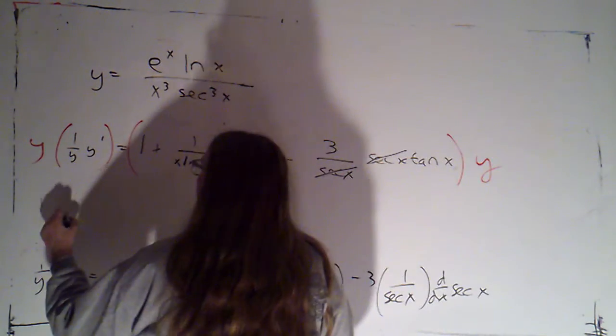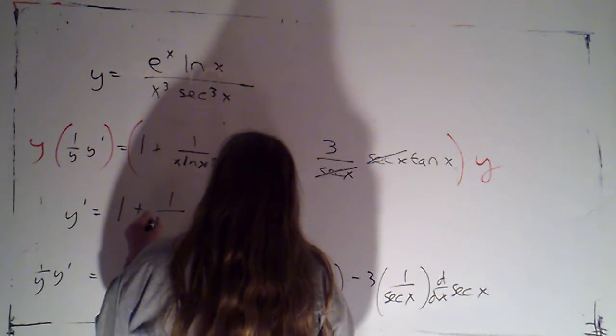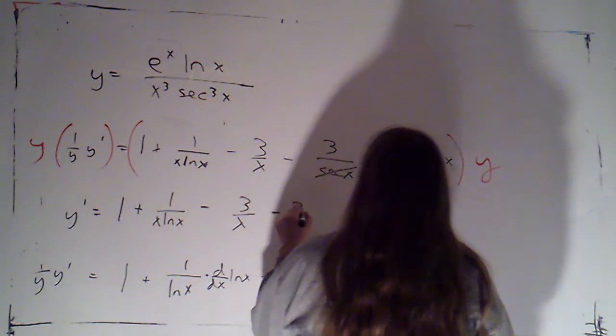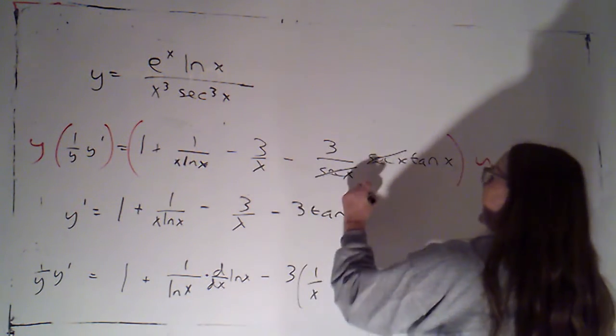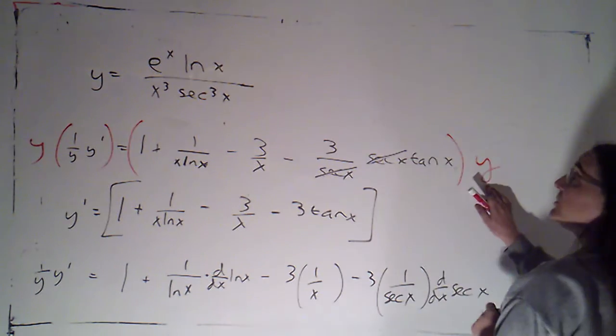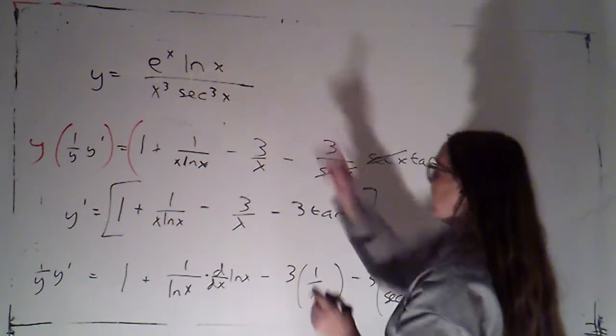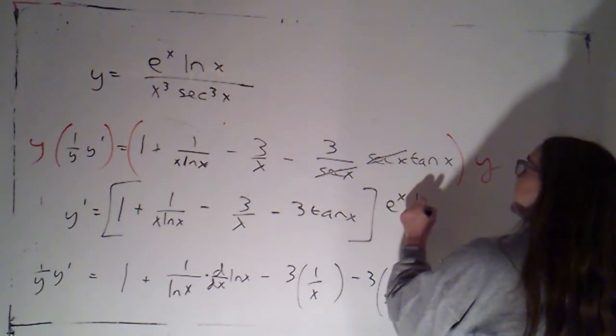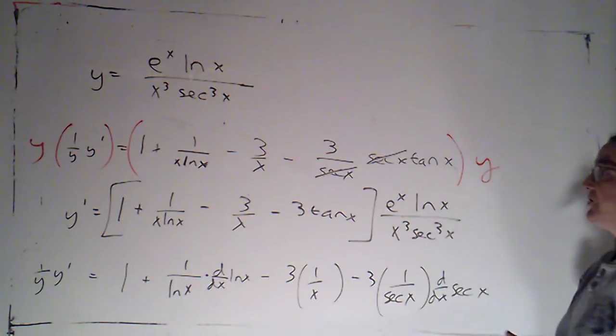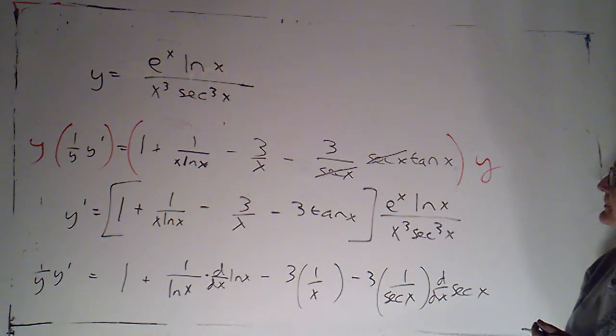So, we will have y prime is 1 plus 1 over x ln x minus 3 over x minus 3 tan x. And that entire quantity, that whole thing in brackets, gets multiplied by y. And y was just e to the x ln x over x cubed secant cubed x. Okay. Excellent.